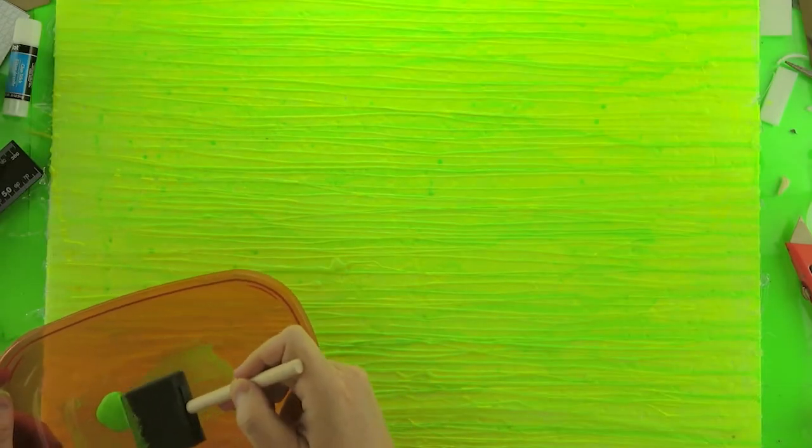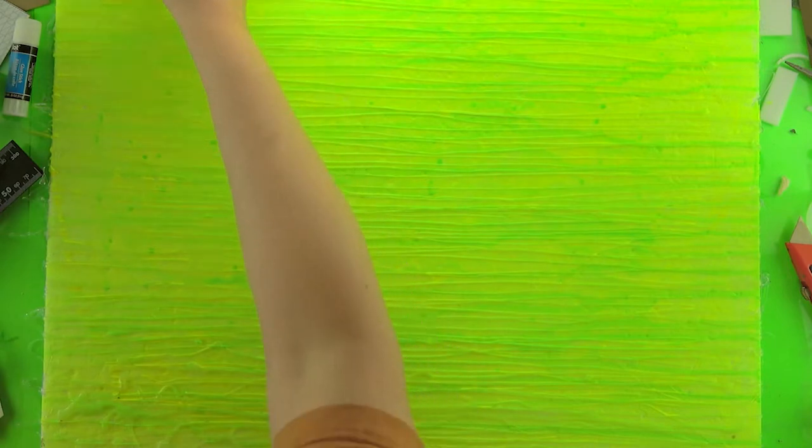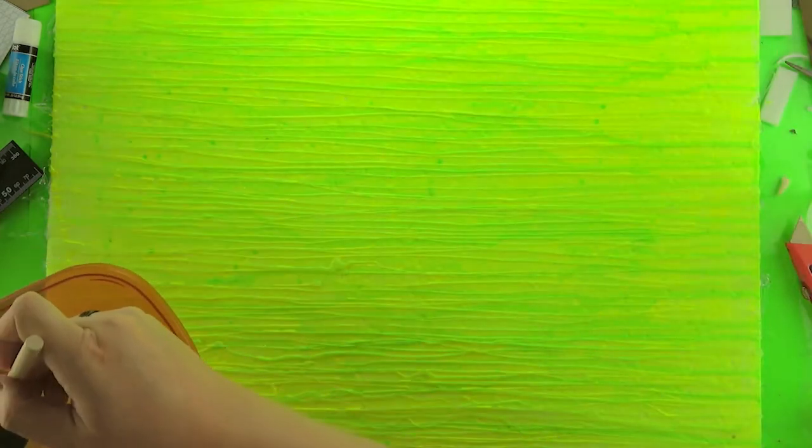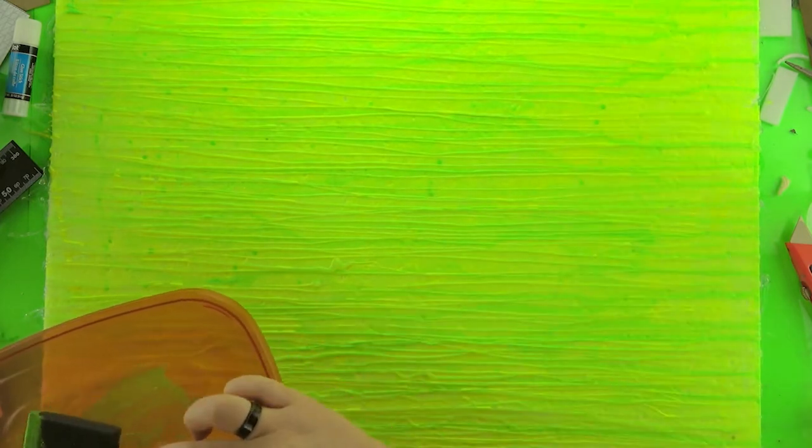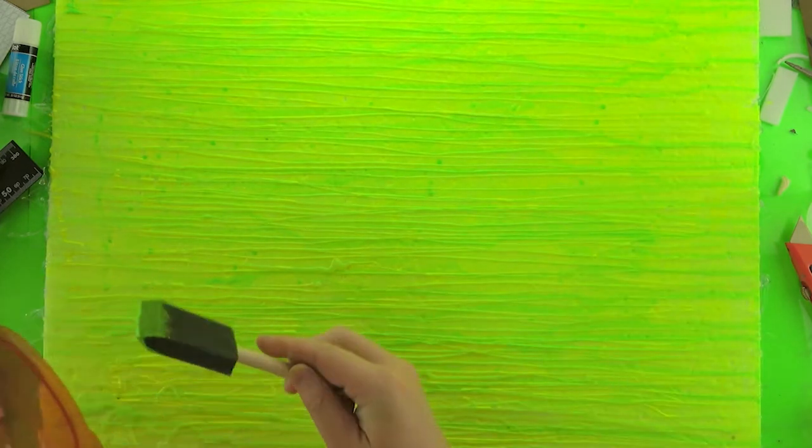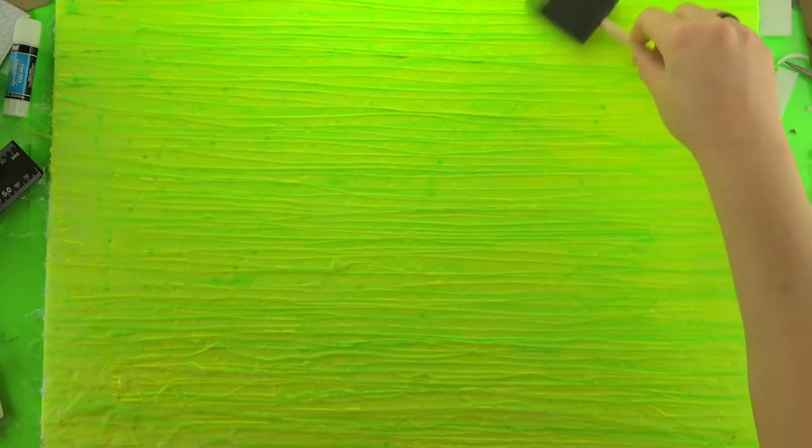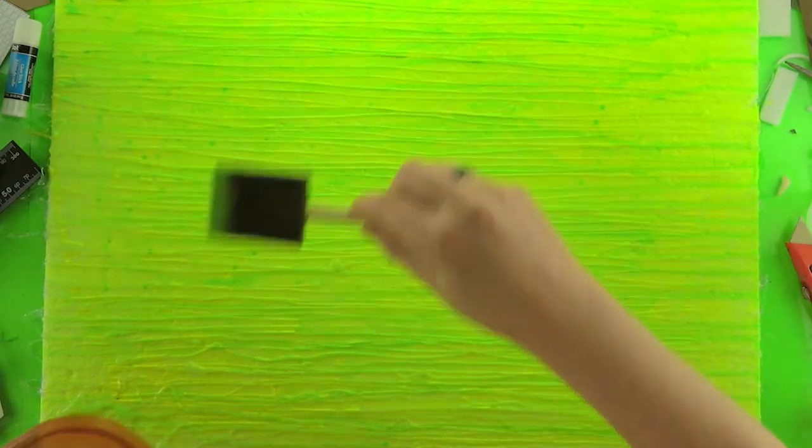And after that I take some full strength green neon paint and I just kind of gently stroke that over the hot glue lines that I made. You can't really go wrong with this. You can put as much or as little on as you want. You just kind of want to give it a little bit more depth with that green.